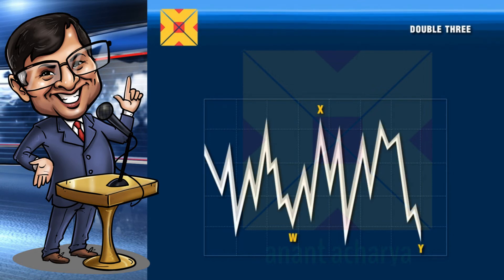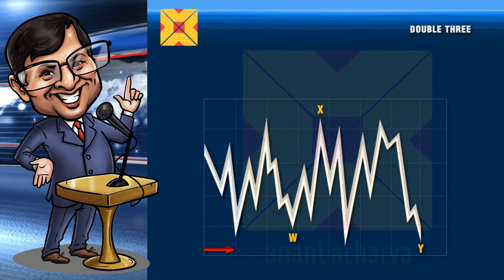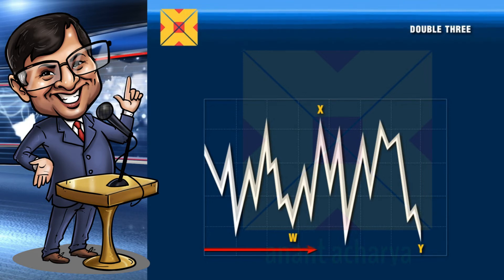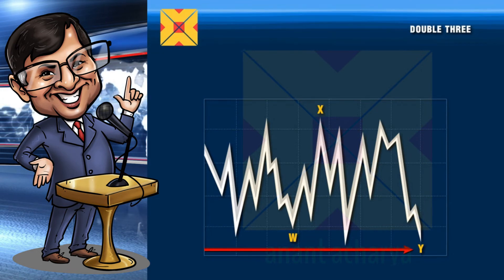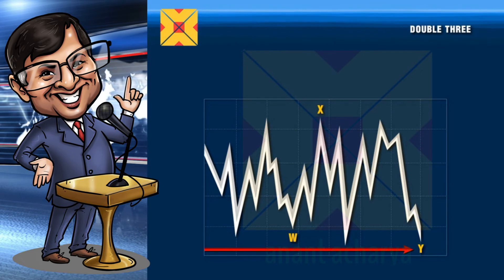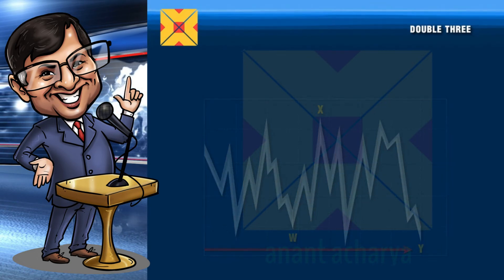Double threes are commonly seen in very short time frames and intraday charts, where markets appear to be in a sideways mode for a long time and then suddenly spurt up or slide down on news. They are also seen very commonly in commodity and forex charts.